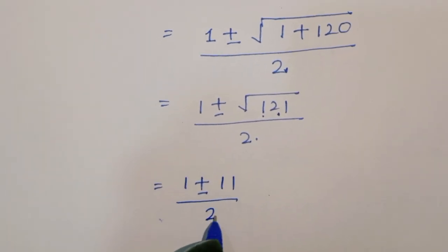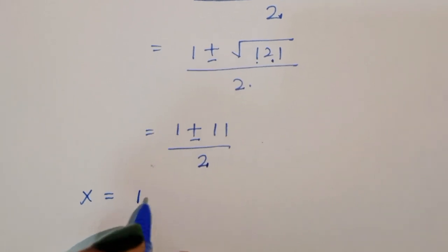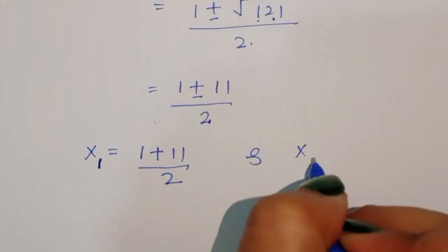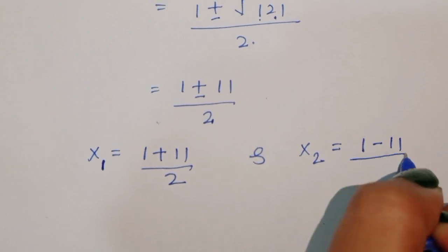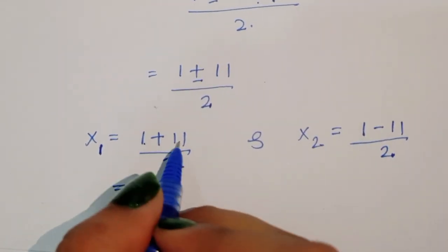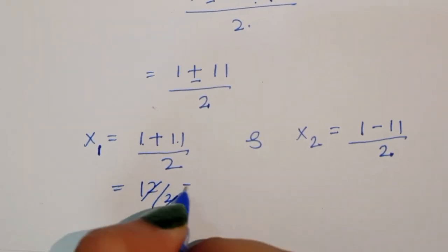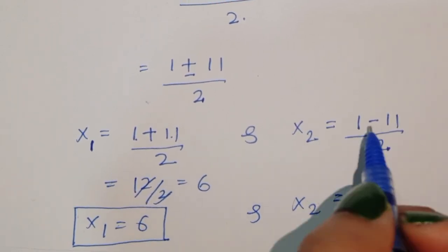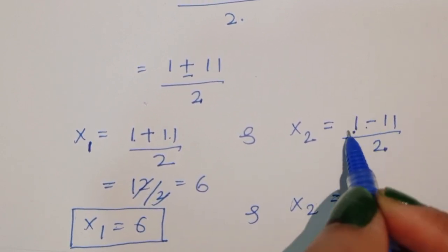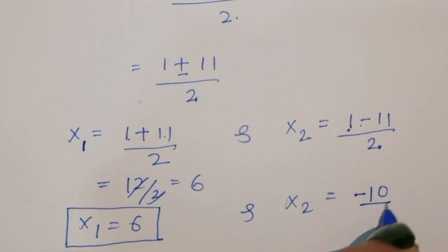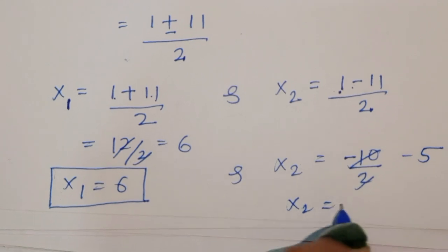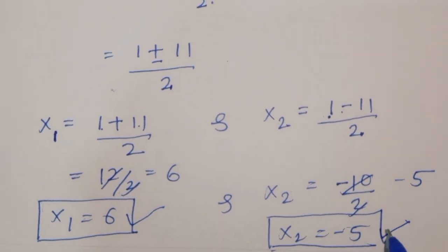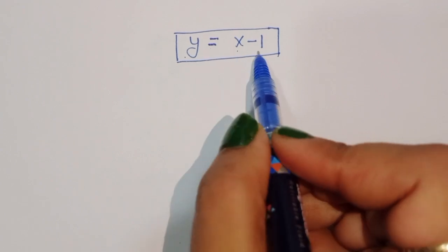We get two solutions: x1 = (1 + 11) / 2 = 12 / 2 = 6, and x2 = (1 - 11) / 2 = -10 / 2 = -5. So x1 = 6 and x2 = -5. Now we find y using y = x - 1 from equation 1.